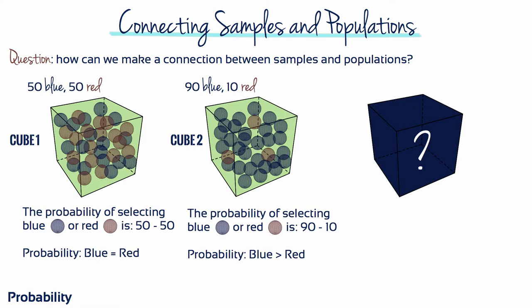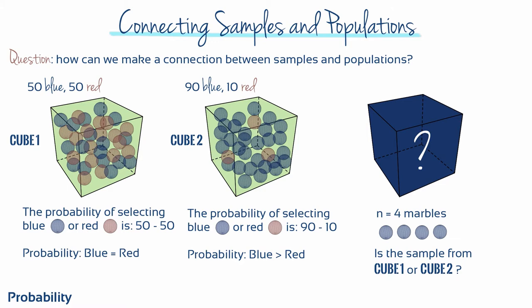Let's say we blindfolded you, randomly assigned one of the cubes, and allowed you to choose n equals 4 marbles. Your task is to determine, based on your sample results, whether you've been given cube 1 or cube 2. You choose your 4 marbles, one after the other, and they're all blue. It should be clear that it would be relatively unlikely to obtain this sample from cube 1 — the probability of this happening is low, and in 4 draws you almost certainly would get at least 1 red marble. On the other hand, this sample would have a high probability of coming from cube 2, where nearly all the marbles are blue. Your decision, therefore, should have been that the sample probably came from cube 2.